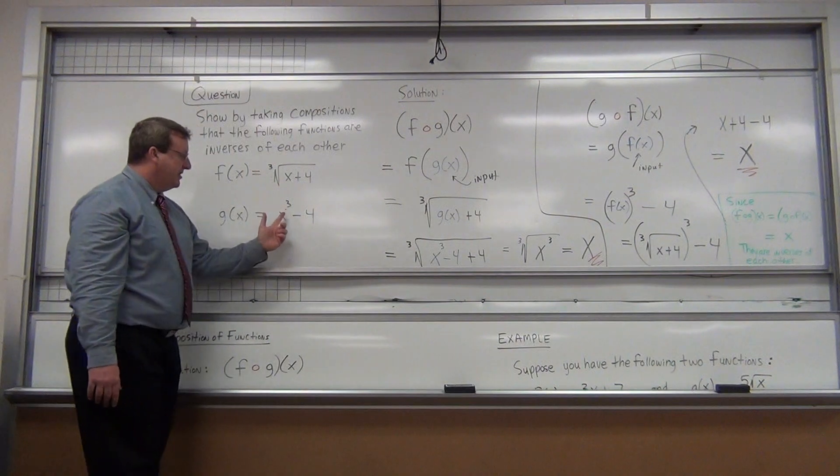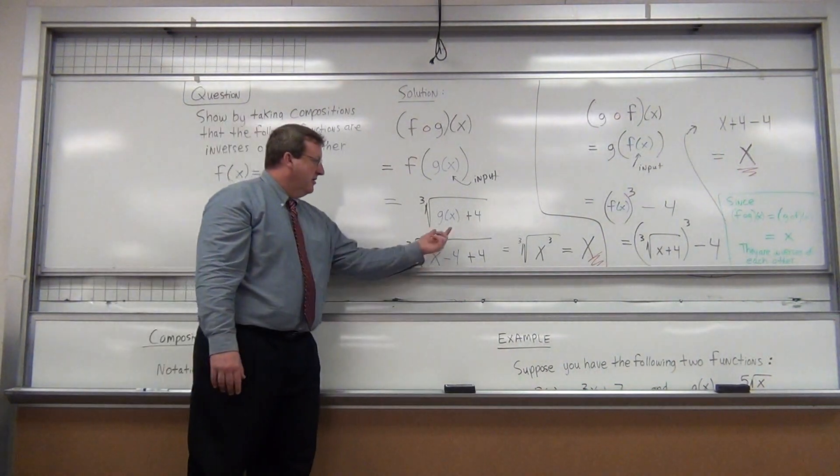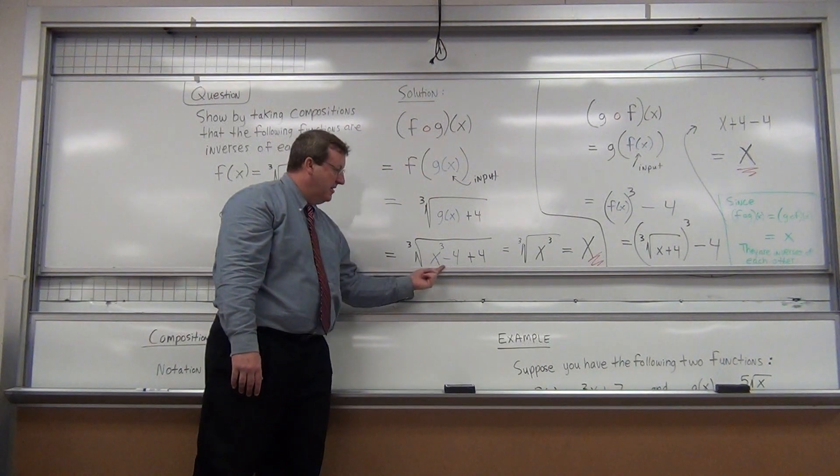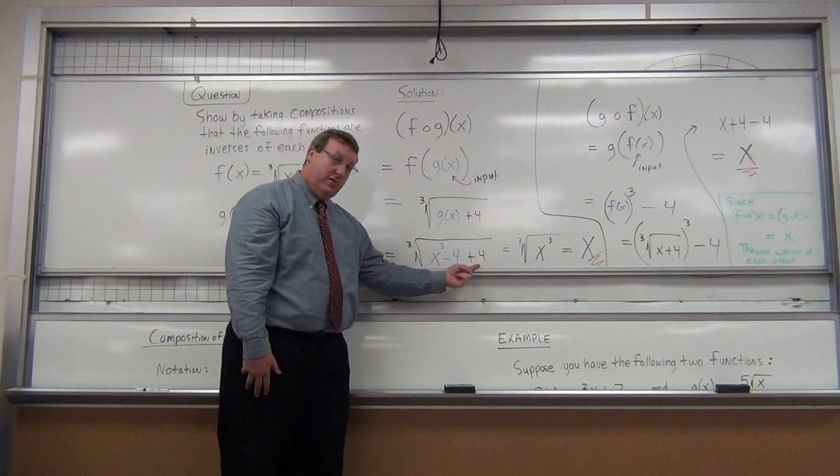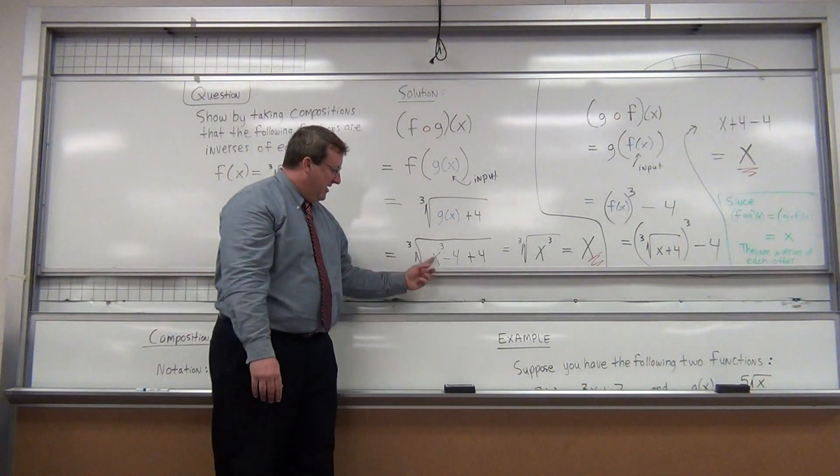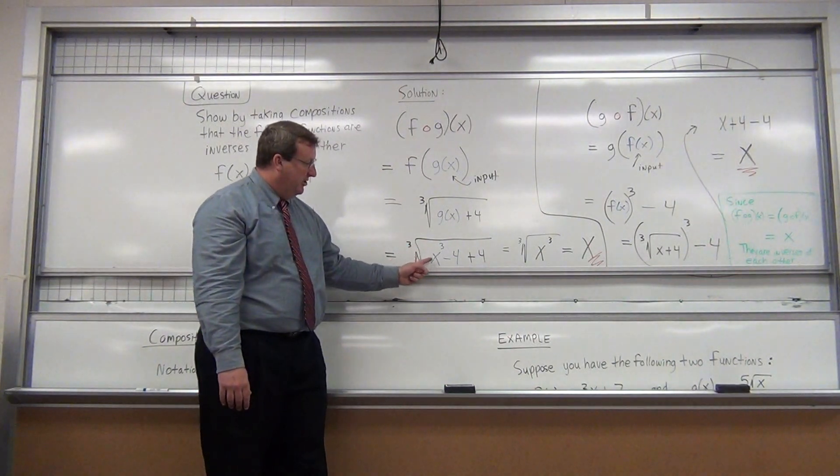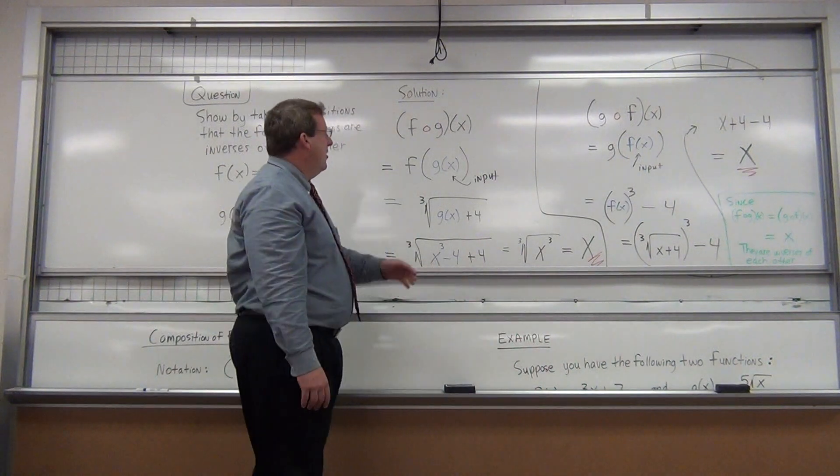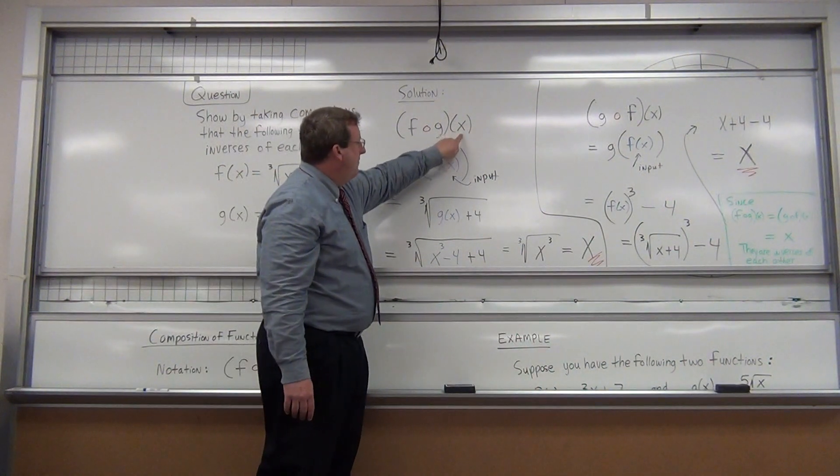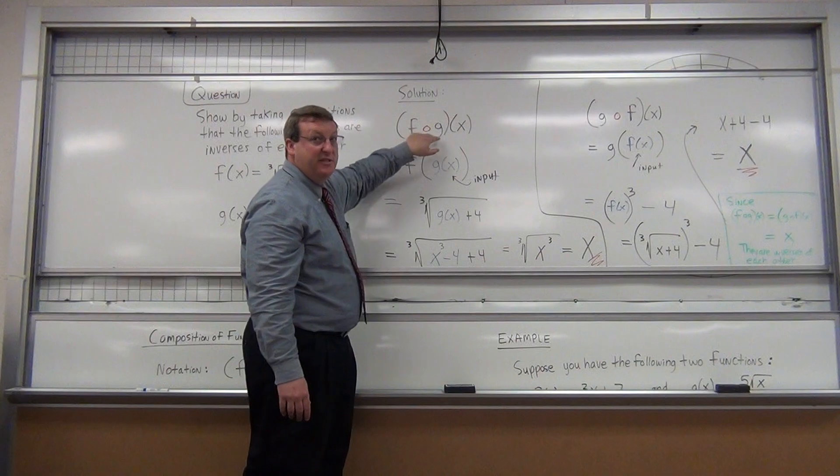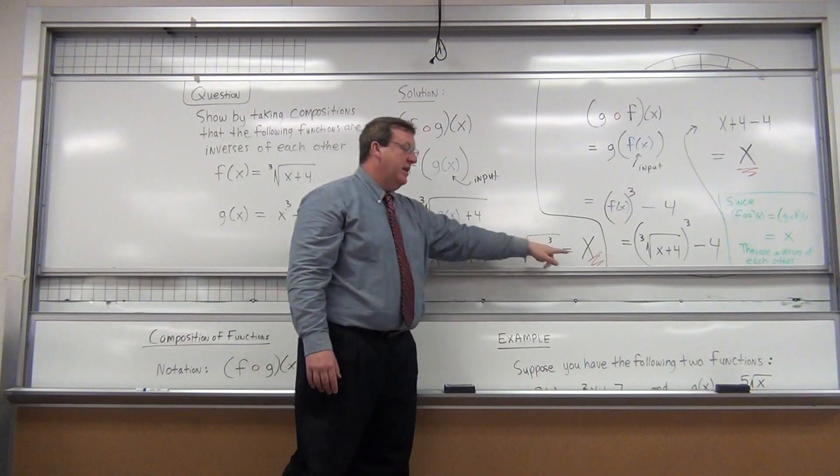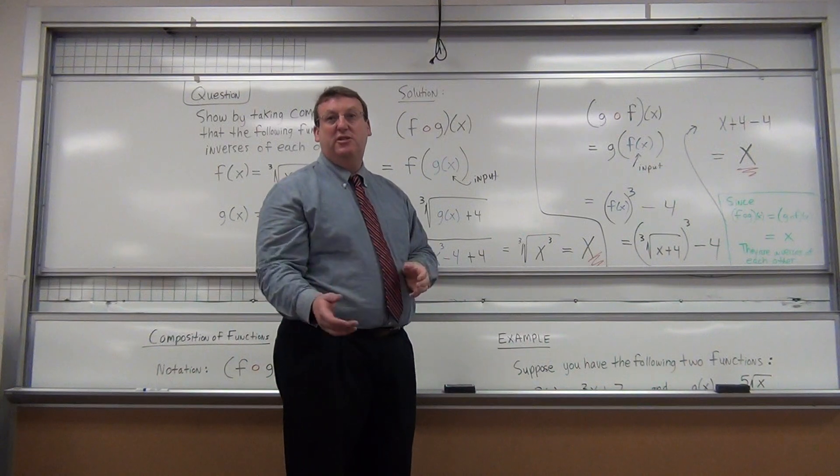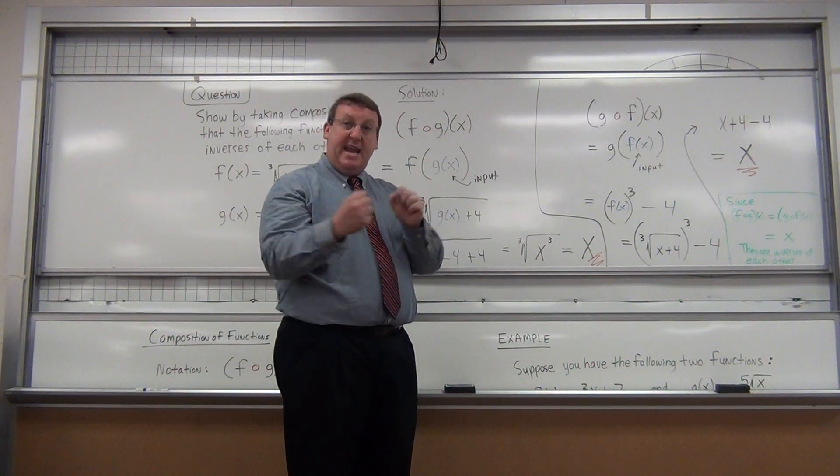Now, what is g of x? It's x cubed minus four. So, we plug it in, right? You see a g of x, x cubed minus four. You replace it. What's minus four plus four? Zero. So, what's the cube root of x cubed? It's simply x. Now, isn't that interesting? Literally, what we put in to these two functions being composed is what came out. That is a characteristic of inverse functions. Inverse functions kind of cancel each other out.